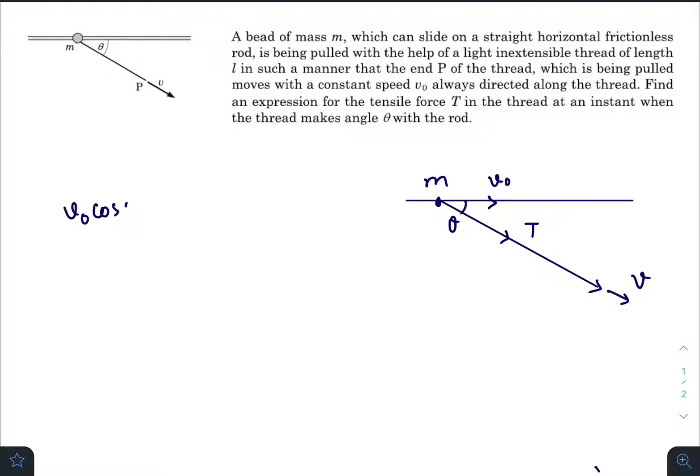So V0 cos theta equals V. So V0 will be V divided by cos theta. This is the speed with which the mass is moving over the rod.